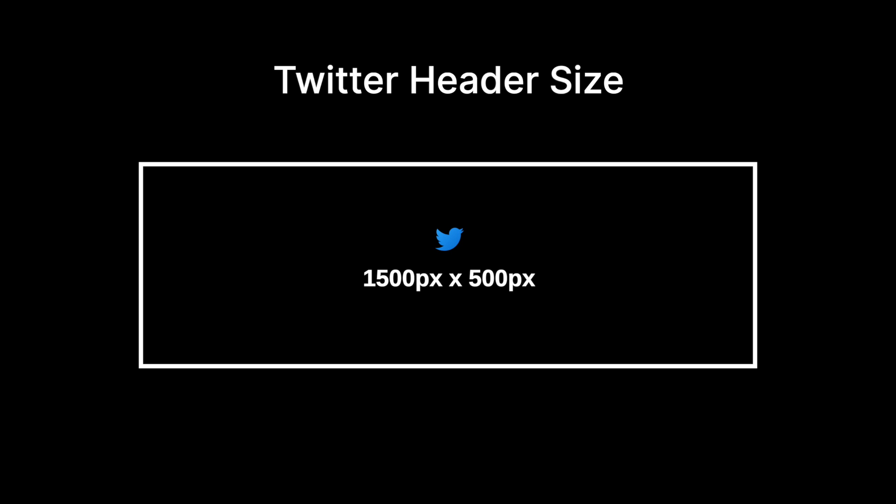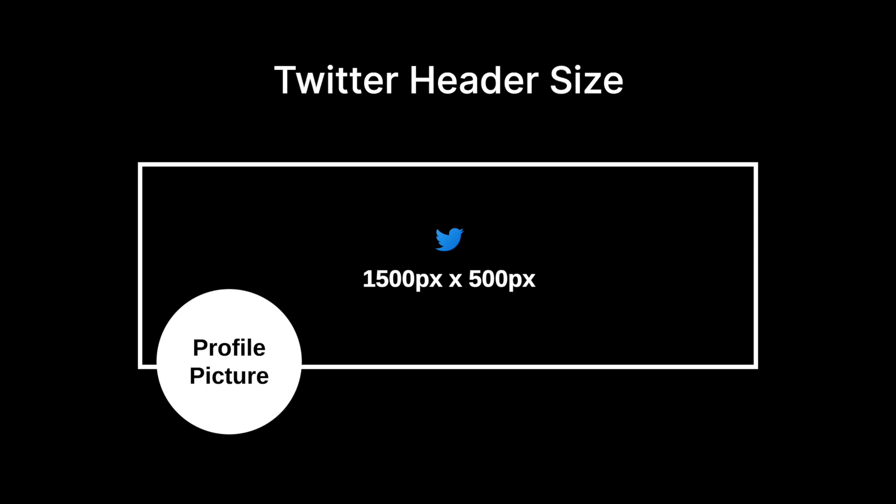Before we start designing, let's quickly go over the recommended dimensions. Your Twitter header size should be 1500 pixels by 500 pixels. There's also a small section in the bottom left corner that will be covered by your Twitter profile picture, so it's important to keep this in mind when you're adding design elements to your header.